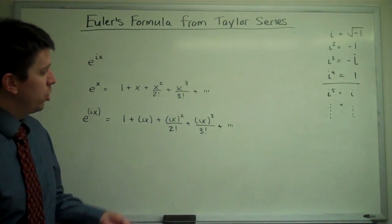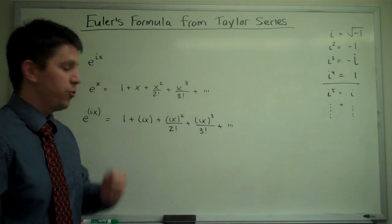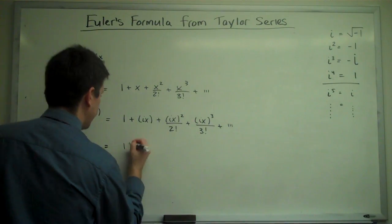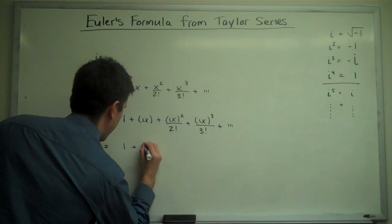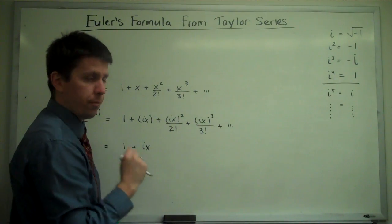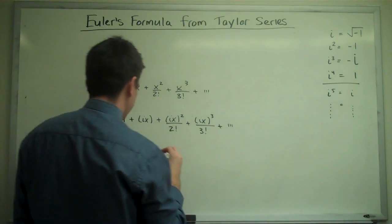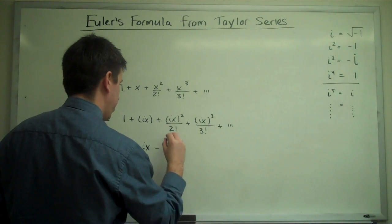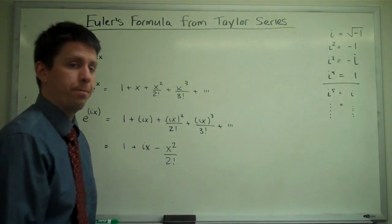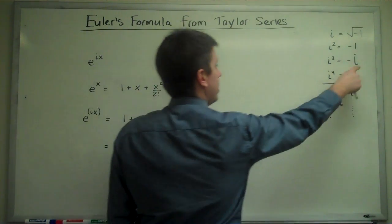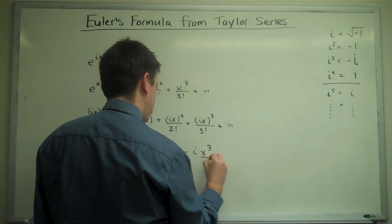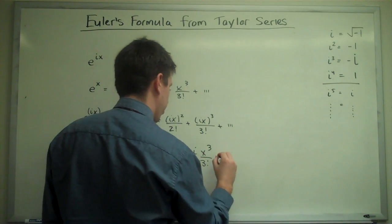So using this information, we can turn some of these i's into real numbers. So 1 stays the same. i x does not change, but here we'll have i squared x squared. i squared is minus 1. So that becomes minus x squared over 2 factorial. i cubed is minus i, so we get minus i x cubed over 3 factorial.